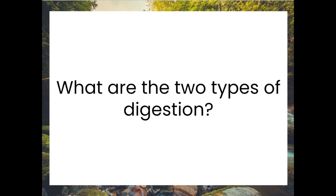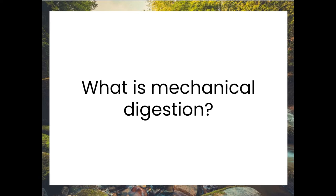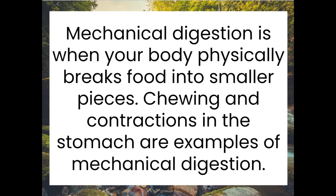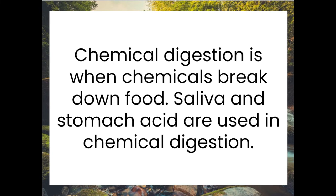What are the two types of digestion? Mechanical digestion is when your body physically breaks food into smaller pieces. Chewing and contractions in the stomach are examples of mechanical digestion. Chemical digestion is when chemicals break down food. Saliva and stomach acid are used in chemical digestion.